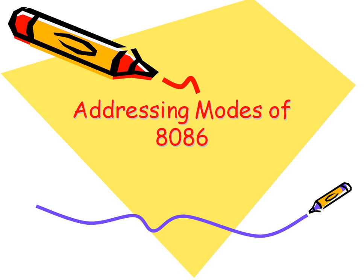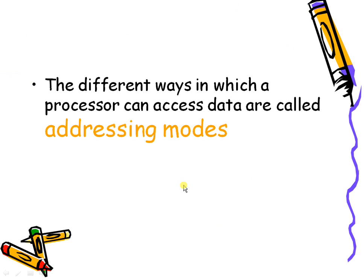The different ways in which a processor can access data are called addressing modes. The operand can be stored anywhere — it can be stored in a register, in memory, in an input-output port, or it can be accessed directly with the help of an instruction.